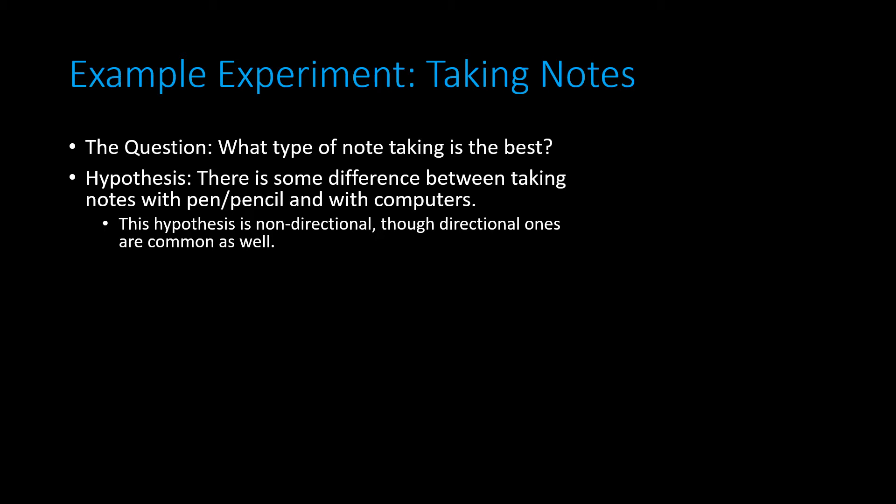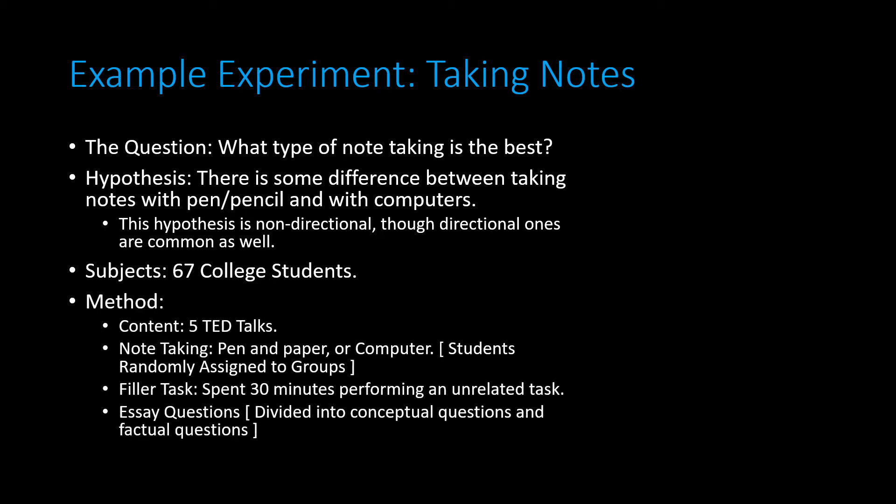In this case the hypothesis is non-directional, as it is just looking for some difference between these two note-taking styles. There were 67 college students in this experiment. The method consisted of students watching five TED talks and being randomly assigned to take notes on these TED talks via either pen and paper or with a computer. It is important to remember that students were randomly assigned to these groups.